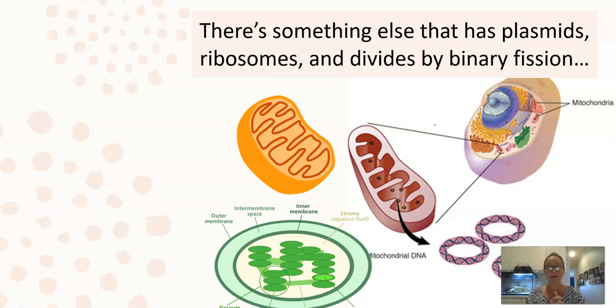It comes down to: mitochondria and chloroplasts have a double membrane, which other organelles don't. They have their own plasmids, which plasmids are unique to prokaryotes. So they have their own plasmids, which is extra nuclear, like DNA that's outside of the nucleus.